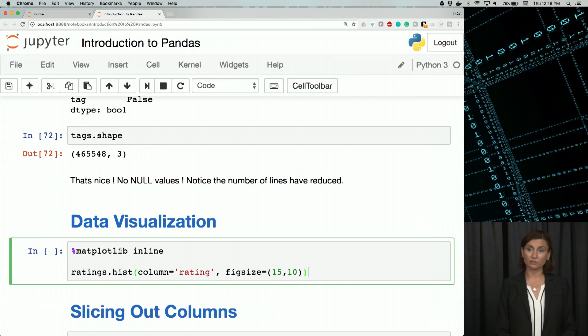So let's go ahead and execute this. So what we've done again is we took the rating column from the ratings data frame and provided that column name to histogram function as an input, and we also use the fig size option to adjust that graph size.